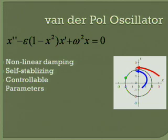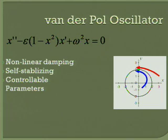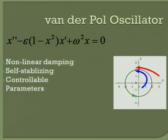So theoretically, wherever we start, we can eventually reach this circle as shown in the presentation, which is called the limit cycle. We have two controllable parameters: epsilon, which controls the damping term, and omega squared, which controls both the amplitude and the period.